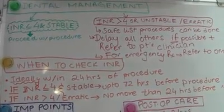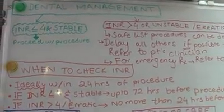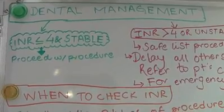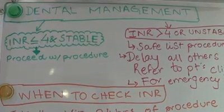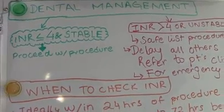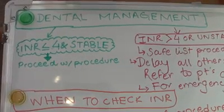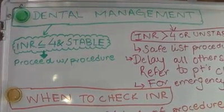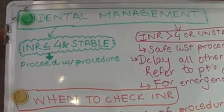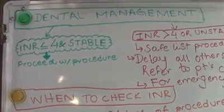The management of these patients differs depending on their INR. If the INR is less than or equal to 4 and it's stable, then we can go ahead with pretty much any procedure. By stable, I mean the patient's INR has not been more than 4 in the last 2 months and it hasn't deviated by more than 0.5 in the last 3 readings — so the last 3 readings are within a range of 0.5.